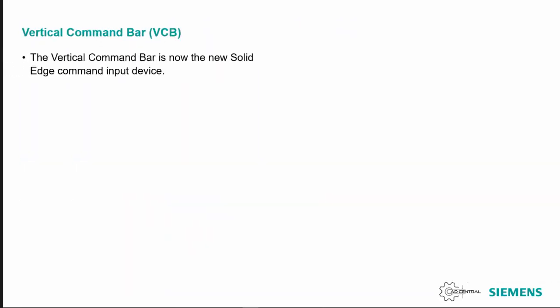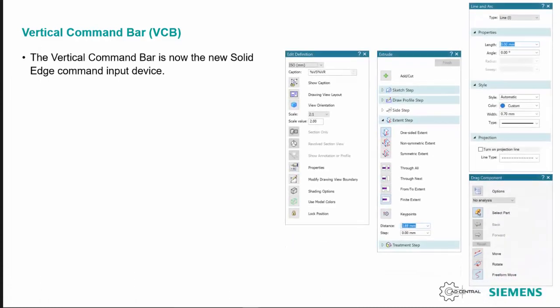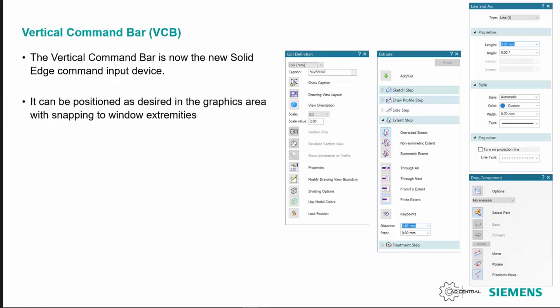The vertical command bar is the new default for Solid Edge — when you enter a command it's the one that pops up giving you your options. It can be positioned anywhere on the screen and should snap to the window extremes. Unfortunately the horizontal command bar is no longer available, so you'll just have to bear with the new one.